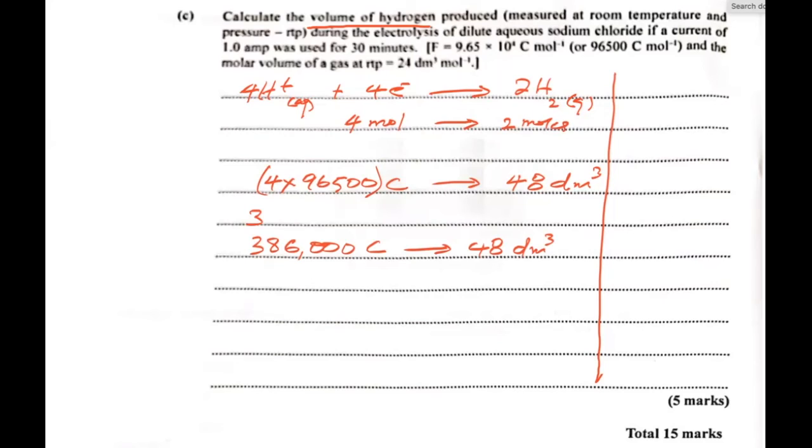So we're given one ampere. So Q equals I times T, I meaning current strength in amperes and time is in seconds. So we could rewrite this and say Q is equal to one ampere times 30 minutes. 30 minutes is 30 times 60, which would be 1800 seconds. So the quantity of electricity we have is 1800 coulombs. So we're going to take this and plug into our equation.